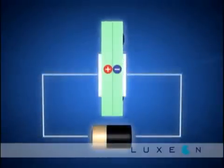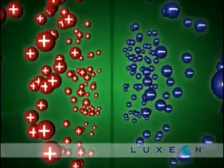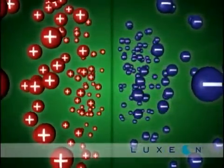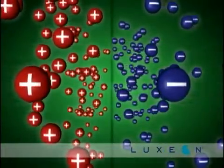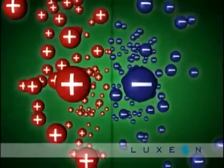When a current supply is connected to the diode, the negatively charged electrons are forced to move one direction and the positive holes move in the opposite direction. When a free electron comes near a hole, it combines with the hole.